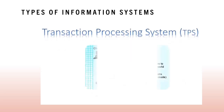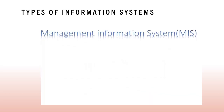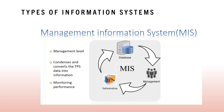Transaction processing systems serve the people in the operational level of an organization. They collect and store information about transactions and control some aspects of transactions. A sale of an item in the store is an example of a transaction. Management information systems, on the other hand, serve at the management level of the organization. The system condenses and converts the TPS — that is, transaction processing system — data into information for the purpose of monitoring performance and managing the organization. Transactions that are recorded in the TPS are analyzed and reported by MIS personnel.